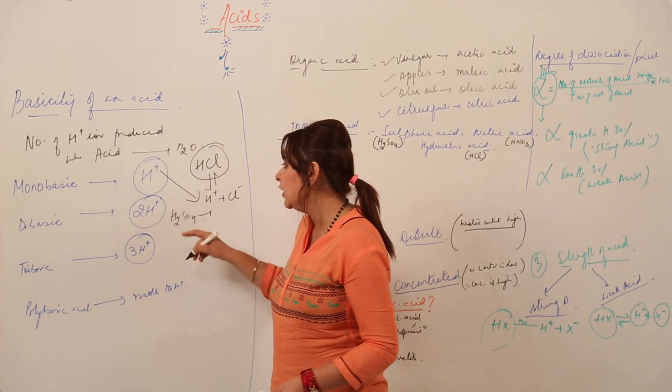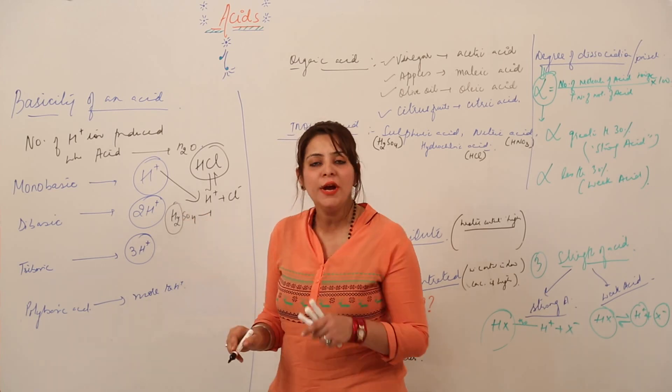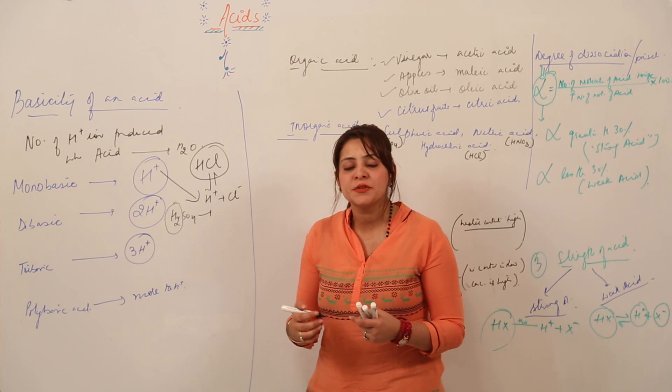Similarly, we have sulfuric acid. How many H ions do you see here? Yes, you are right, there are two H ions.